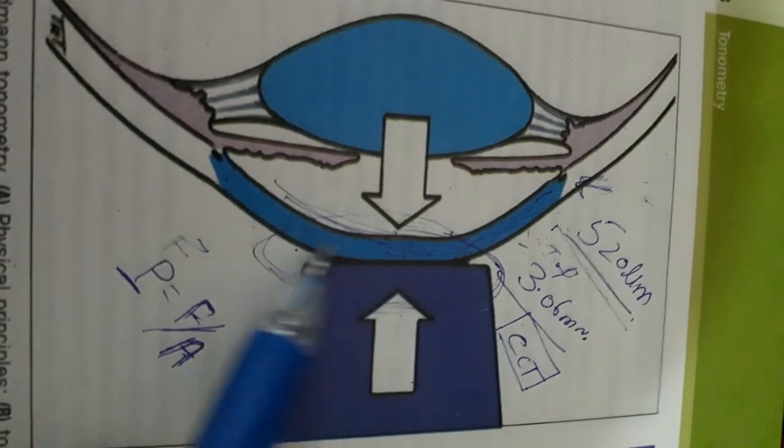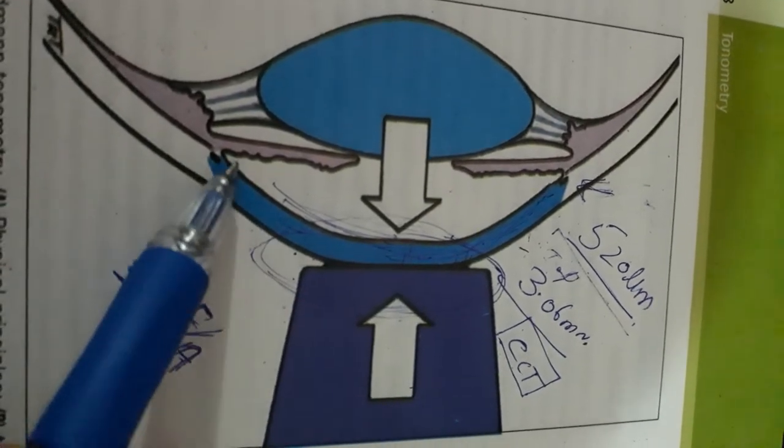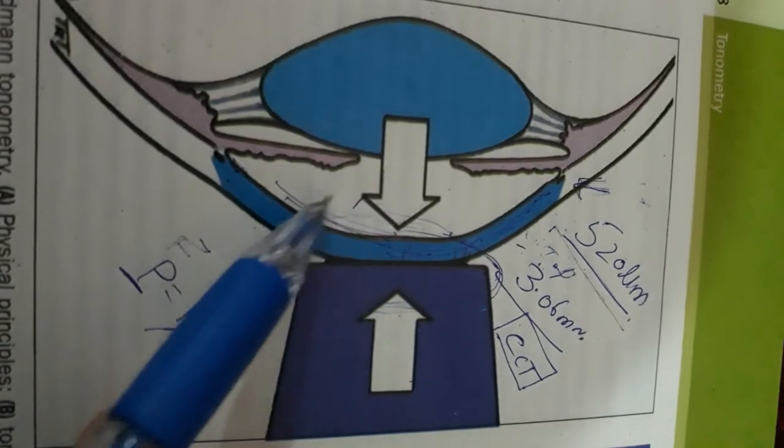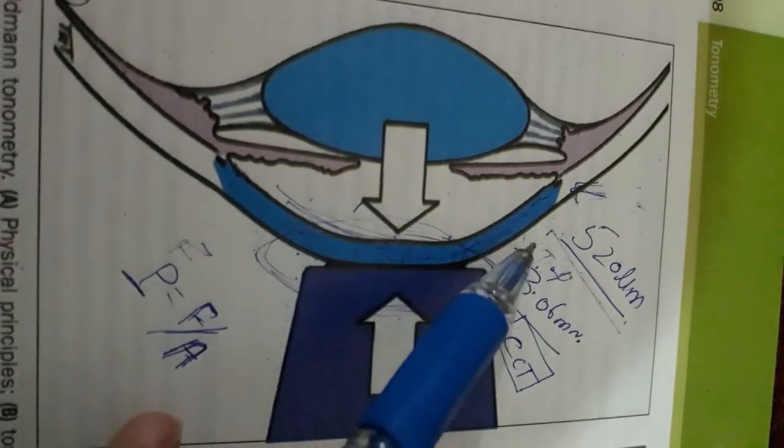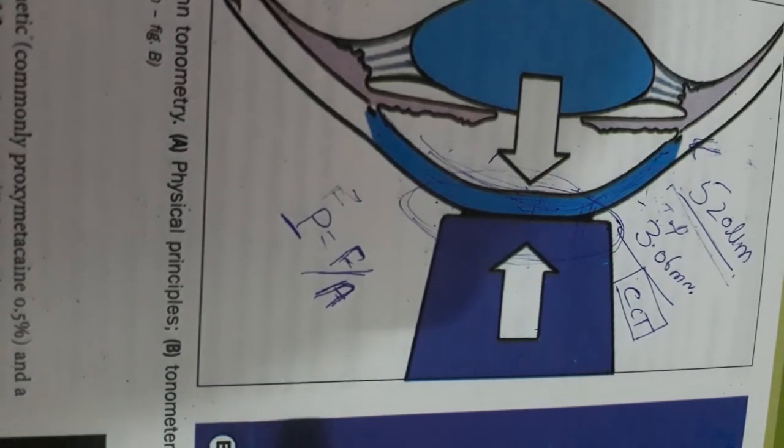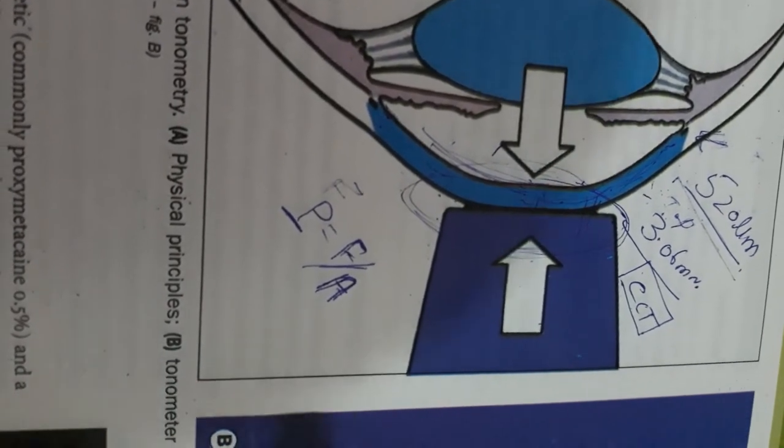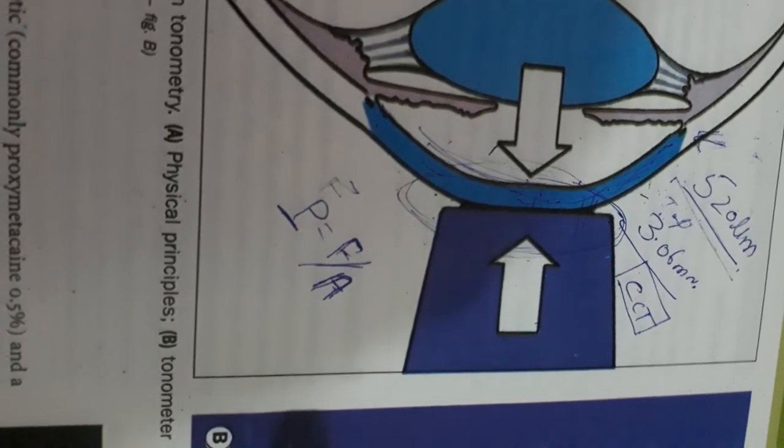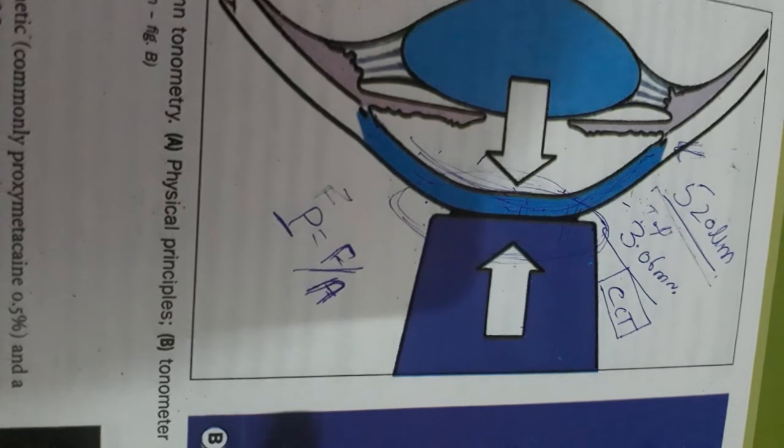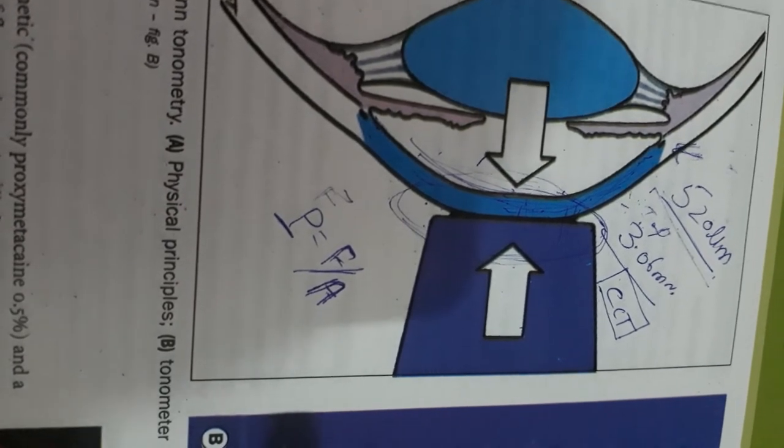In ocular hypertension, the cornea is thick and gives rise to false readings. In normal tension glaucoma, the cornea is thin. Other factors like corneal edema, astigmatism, and incorrect calibration can result in false readings, so manufacturer calibration is necessary prior to checking IOP.